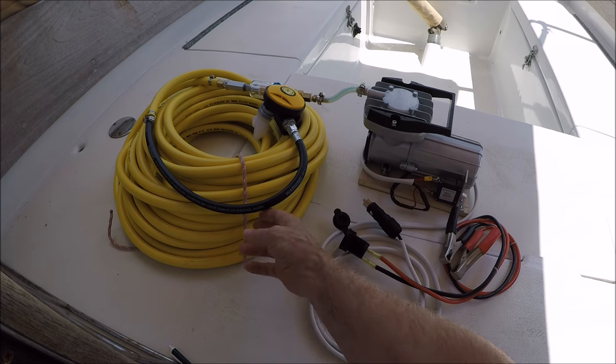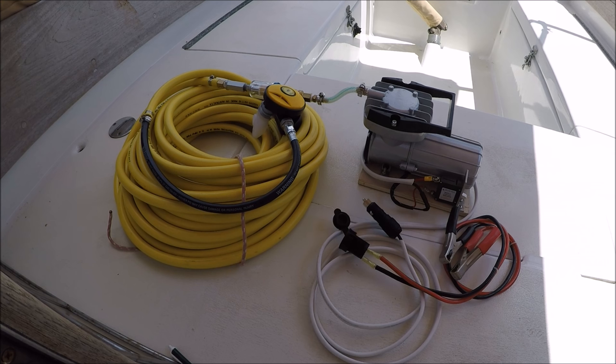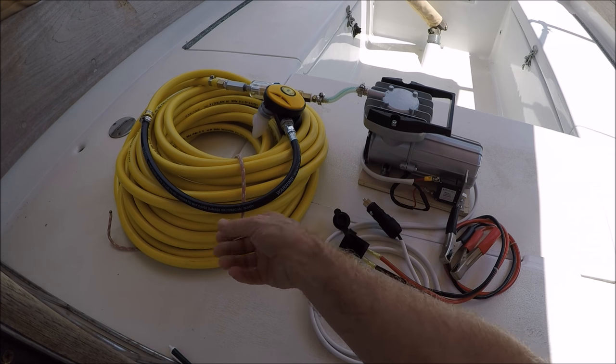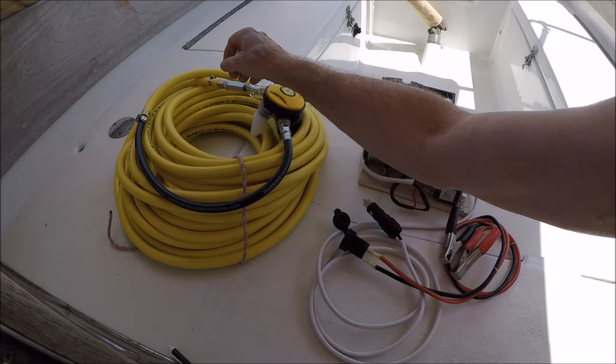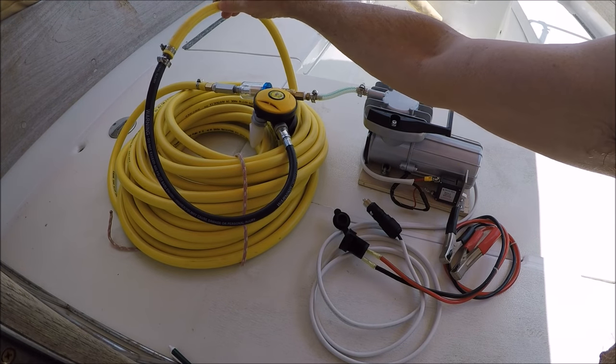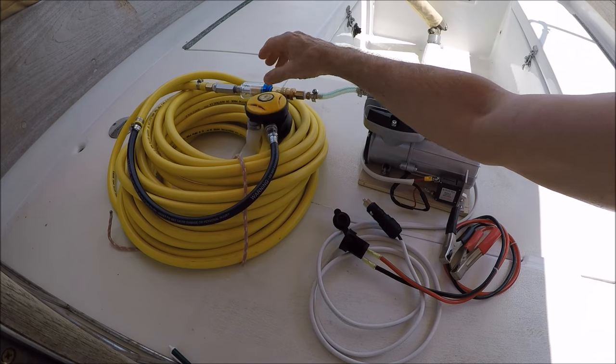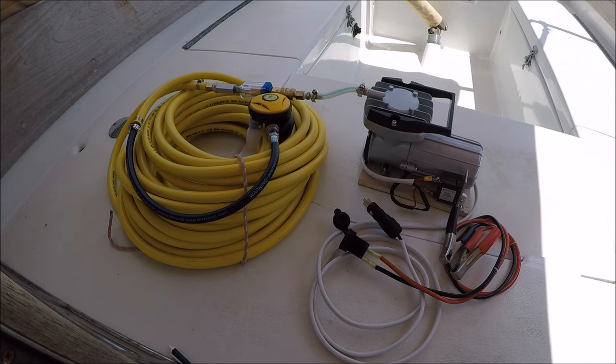And you want to tie this hose off to a cleat or something on deck so that when you're in the water you're not pulling on the compressor itself accidentally. And also you need to have a clip around your waist or a weight belt that is a quick release snap hook that you can hook on somewhere about here so that as you're moving around, the hose is not trying to pull the regulator out of your mouth. And also you don't want to tie that hose permanently to you. It's got to be a quick release catch because you don't want to drown yourself if you get tangled up down there.